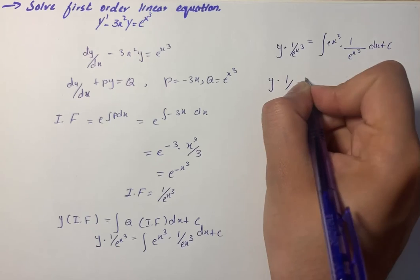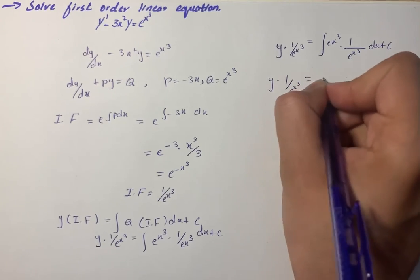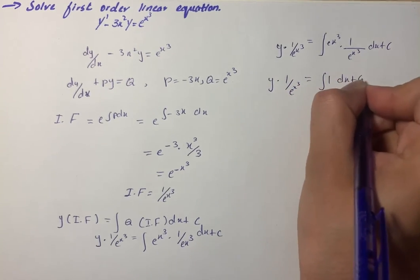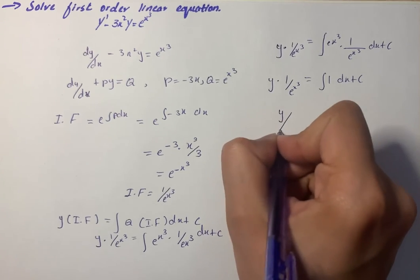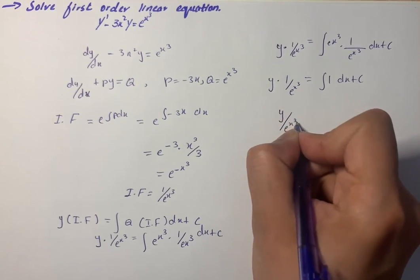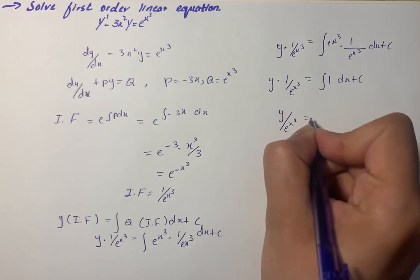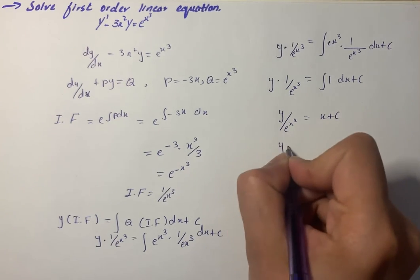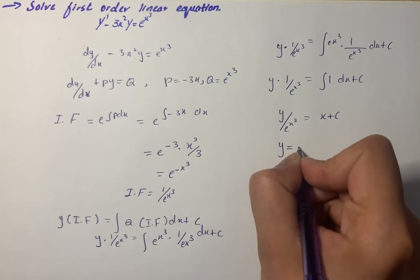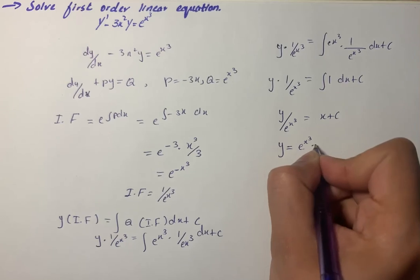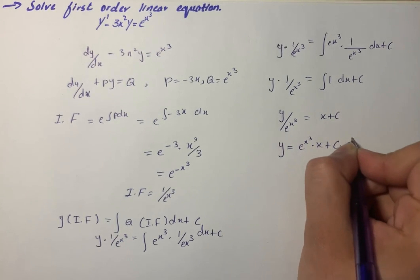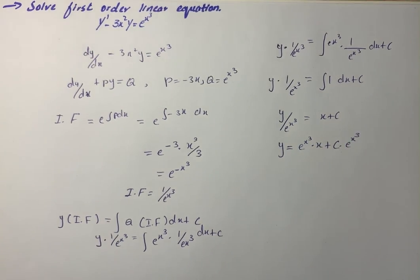So y over e raised to the power x cubed equals x plus C. Therefore, the solution for y is equal to e raised to the power x cubed times (x plus C), which is our final solution for the equation.